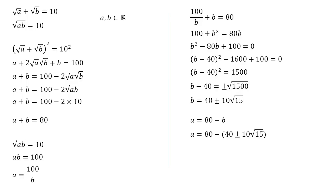So if we take this away, we've got 80 minus 40 is 40 again. And if we subtract the plus or minus, we're going to get minus or plus, just inverted from the b. So a is going to equal 40 minus or plus 10 root 15.